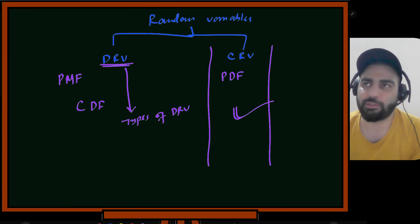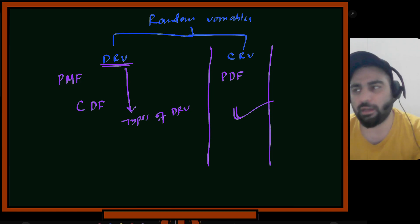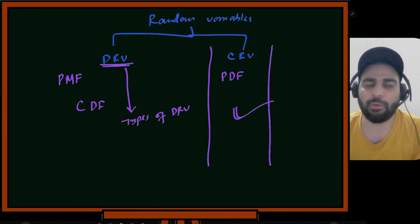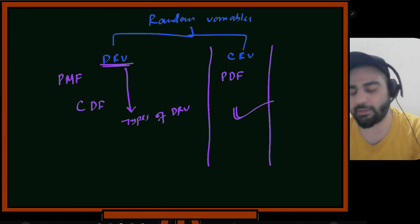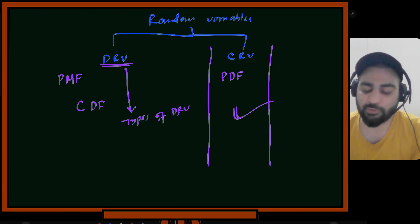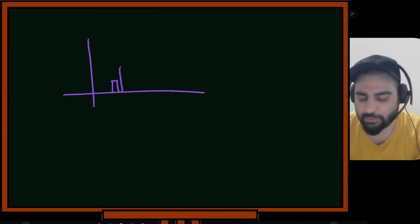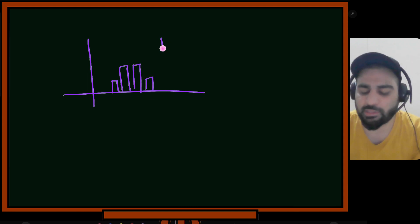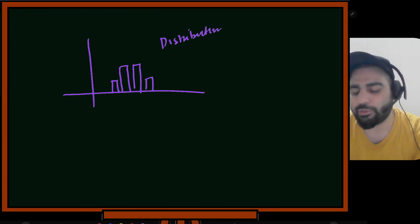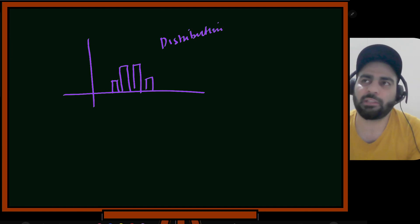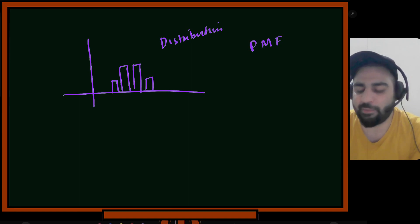These random variables have distributions. A distribution tells you what is the probability that the variable takes a certain value — some values have higher probabilities, others lower. For a uniform random variable, everything was assumed equal. For a binomial random variable, we saw a curve showing how probability mass is distributed over different values.